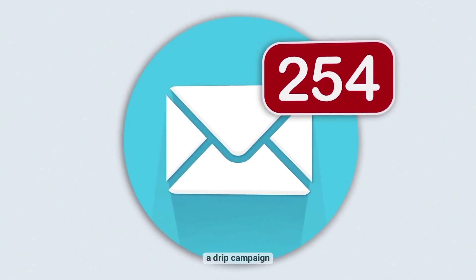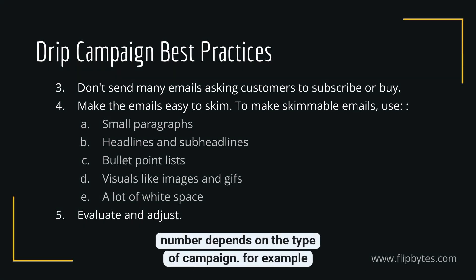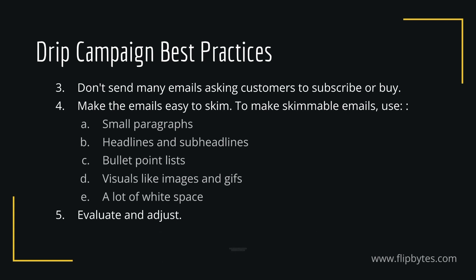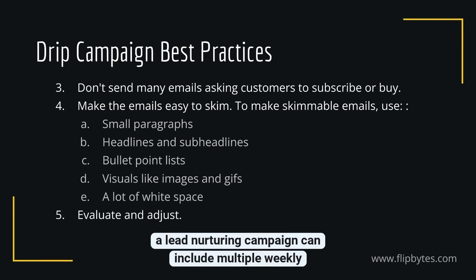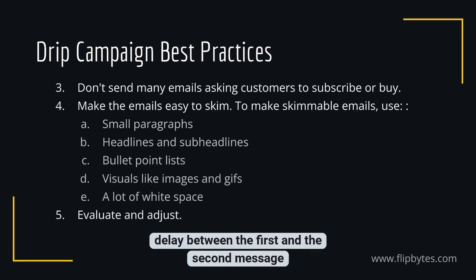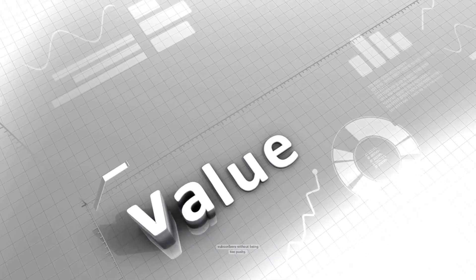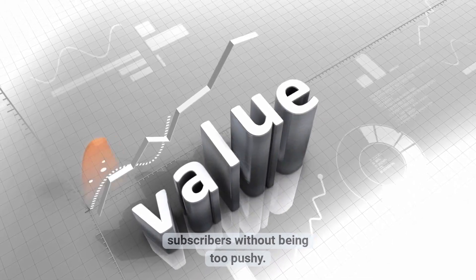Three: don't send too many emails asking customers to subscribe or buy. A drip campaign can have between four to eleven emails sent at least a few days apart. However, the best number depends on the type of campaign — a lead nurturing campaign can include multiple weekly emails, while a prospecting campaign can have a longer delay between messages. A common misconception is that drip emails should be sent in large numbers. The best strategy is to get the value across without being too pushy.